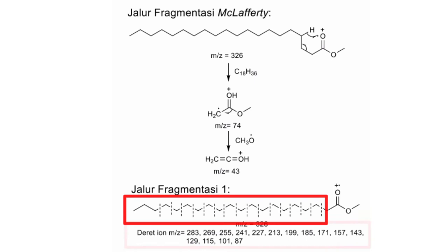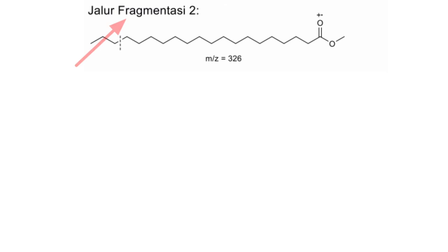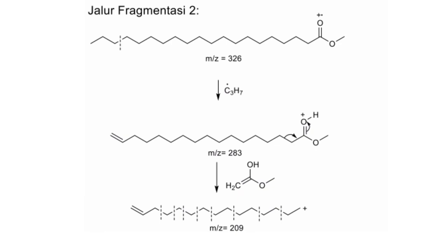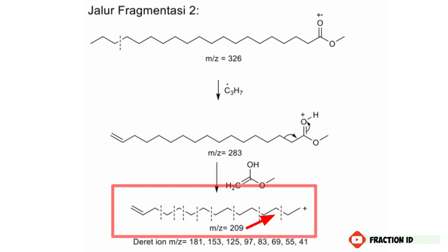Ini adalah jalur fragmentasi kedua metil ester arasidat, terjadi pemutusan di C nomor 3, lalu karena mendapatkan 2 elektron menjadi ada ikatan rangkap 2 yang baru. C₃H₇-nya menjadi radikal, yang ikatan rangkap 2 yang baru ini terbaca di spektrum masa sebesar 283 m/z, dan terjadi pembelahan lanjutan, di mana 2 elektron di ikatan CC ini diberikan ke C yang mengikat karbonil, lalu ikatan rangkap 2 ini — satu ikatannya berisi 2 elektron — diberikan ke oksigen, sehingga senyawa enolnya menjadi radikal, dan yang terbaca di spektrum masanya adalah alkilnya sebesar 209 m/z. Lalu terjadi pemutusan alkil secara berkelanjutan, mulai 181 m/z sampai ujungnya terbaca di spektrum masa sebesar 41 m/z.